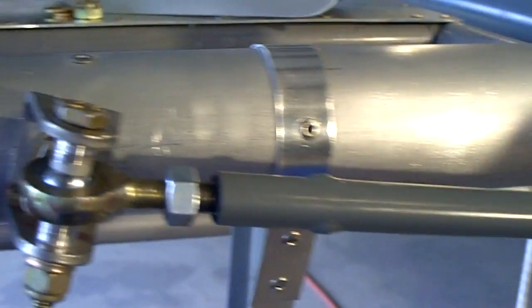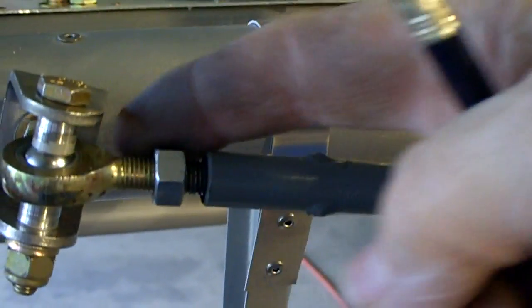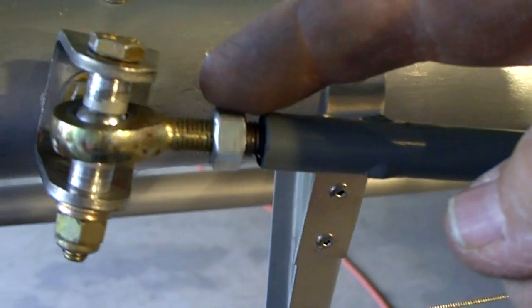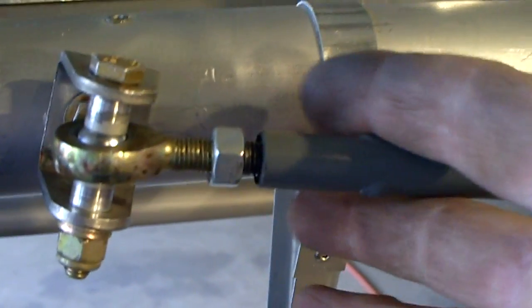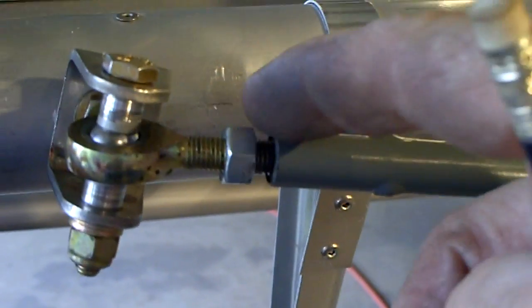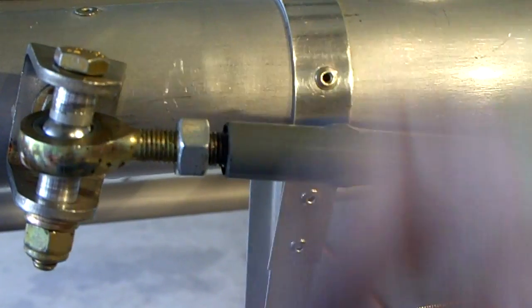Now, I have not set the jam nut on this assembly yet. I won't do that until after I get the gear on, and I adjust the length of this. Once I have the proper length, then I'll go ahead and tighten that down.